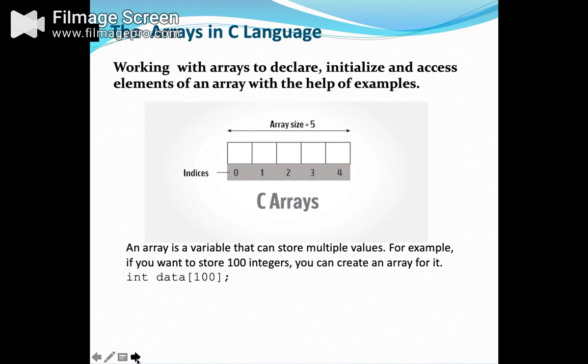So far we have used only the fundamental data types like character, int, float, double, etc. They have been used only to handle a limited amount of data. In many applications, however, we need to handle a large volume of data in terms of reading, processing, and printing. To process such large amounts of data we need a powerful data type that would facilitate efficient storing, accessing, and manipulation of data items. C supports a derived data type known as array that can be used for such applications.